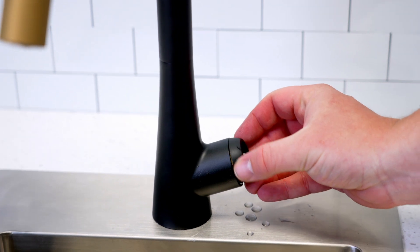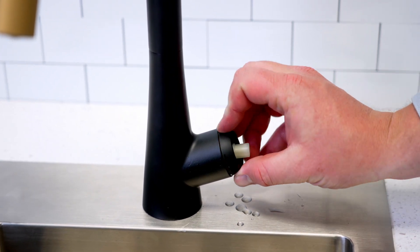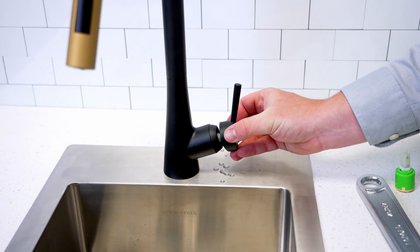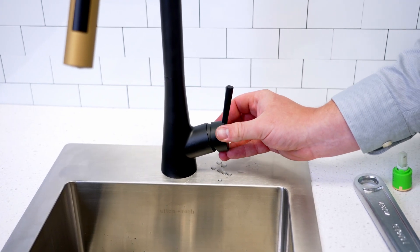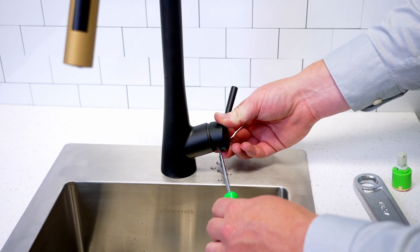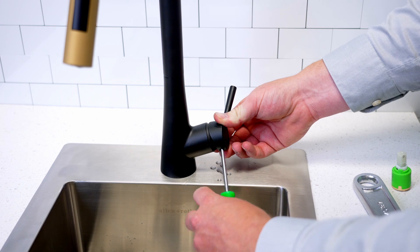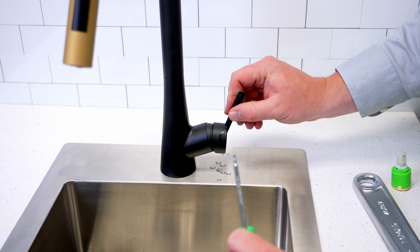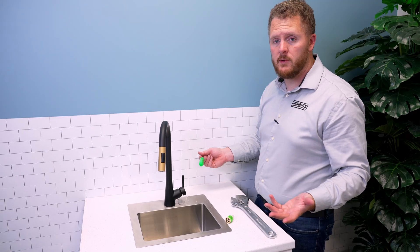Thread that decorative shroud back on. And then we're going to slide the faucet handle on again. Put that screwdriver back in there. Tighten it up and you're done. That's all there is to it.